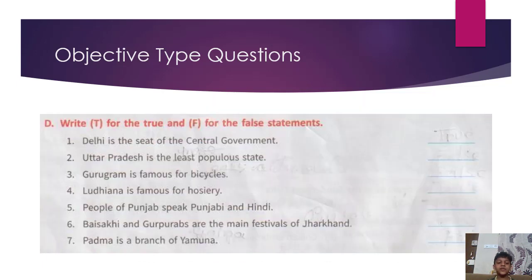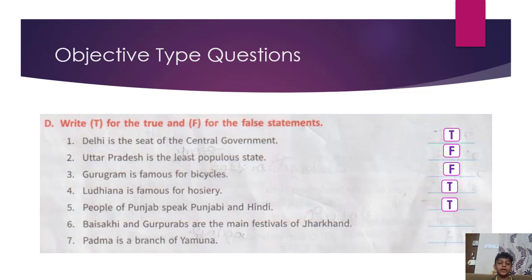D. Write T for true and F for false statements. Delhi is the seat of the central government — True. Uttar Pradesh is the least populous state — False. Gurugram is famous for bicycles — False. Ludhiana is famous for hosiery — True. People of Punjab speak Punjabi and Hindi — True. Basicsic and Guru Purabs are the main festivals of Jharkhand — False. Padma is a branch of Yamuna — False.